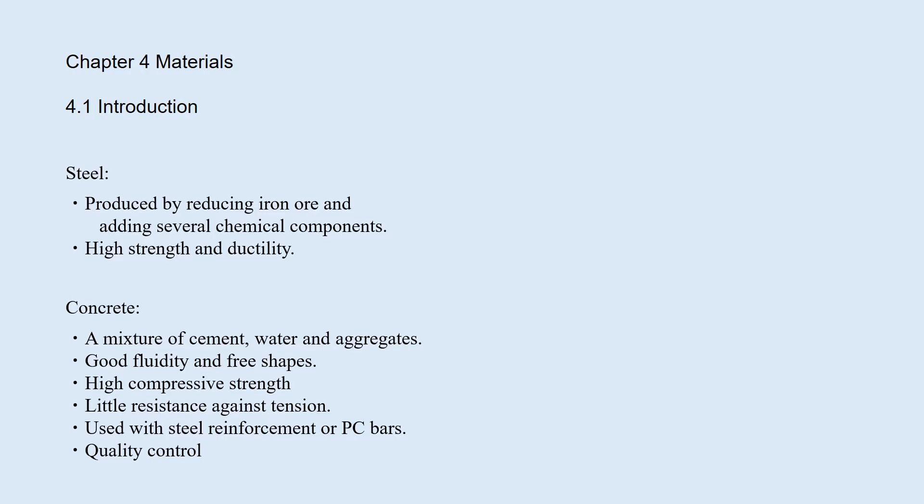Before concrete is hardened, it has good fluidity and can form free shapes. It has high compressive strength but little resistance against tension. To compensate this, concrete is commonly used with steel reinforcement or PC bars. As concrete is cast at construction sites, its quality depends on quality control at site.